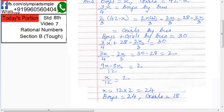Remember this clearly. Boys plus girls by bus equals to 30, and we have found out over here. So solve this. Solve this means 3x by 4 minus 2x by 3 equals to, take 28 on this side, 2 remains. So solve this.